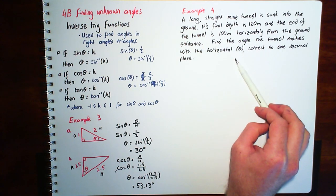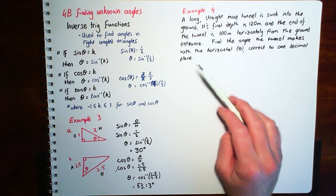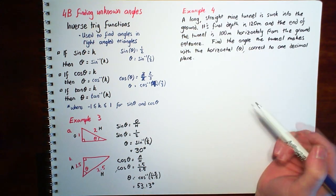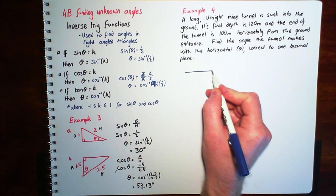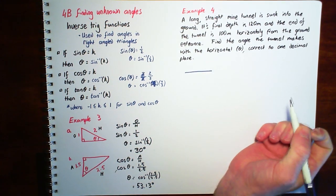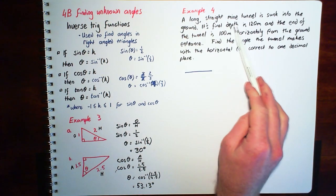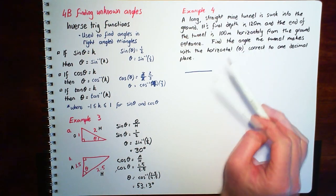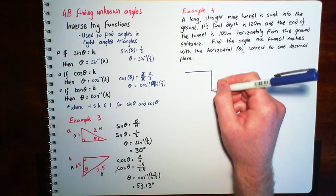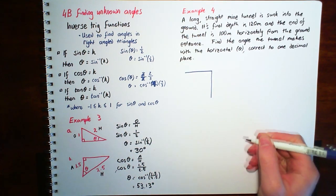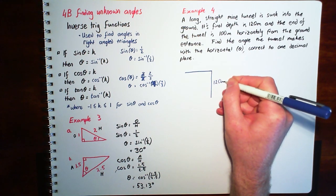These kind of questions I always encourage to draw a picture. So we've got the ground and the final depth is 120 metres down, straight down basically. So if we draw a line that goes straight down, this is 120 metres.